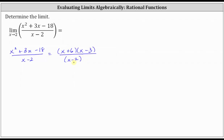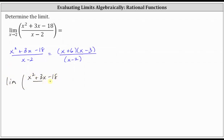We do not have an open point or removable discontinuity. So before we look at the graph of the function, let's determine the one-sided limits as we approach x equals two. Let's first consider the limit of the rational function as x approaches two from the left.